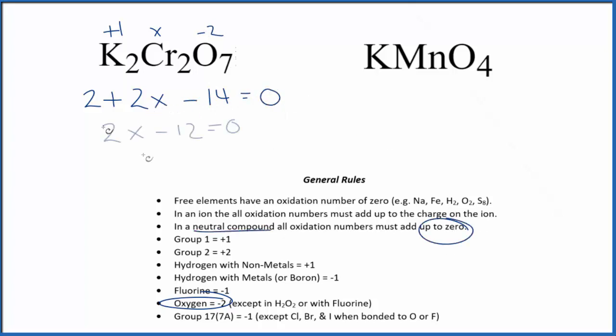Now we just do the math. 2X equals 12, X equals 6. That's a positive 6. So the oxidation number for the chromium here, each chromium atom in K2Cr2O7, that's going to be plus 6.